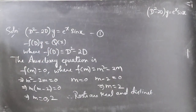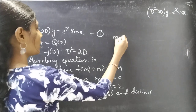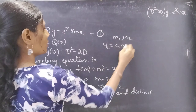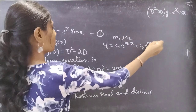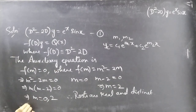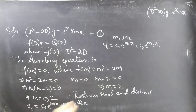We know that when two roots are real and distinct, say m₁ and m₂, then yc = c₁e^(m₁x) + c₂e^(m₂x). Therefore yc = c₁e^(0·x) + c₂e^(2x).